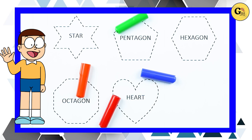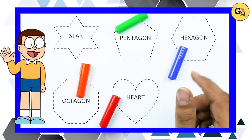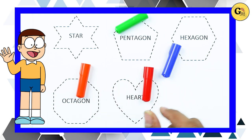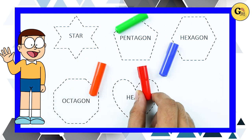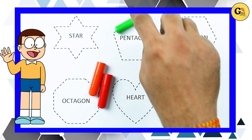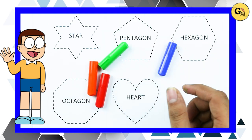Hello friends, today we learn shapes: star, pentagon, hexagon, octagon, and heart with colors. Blue color, orange color, red color, green color.